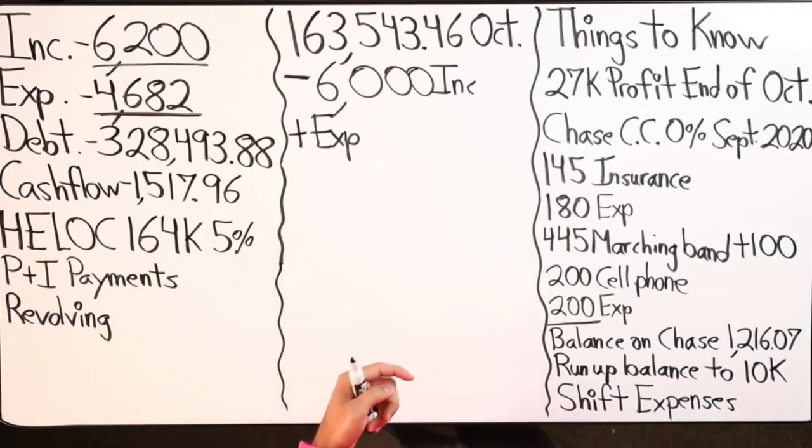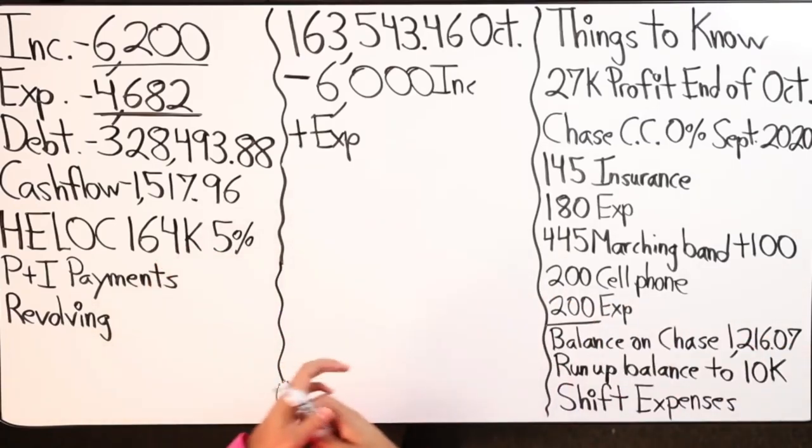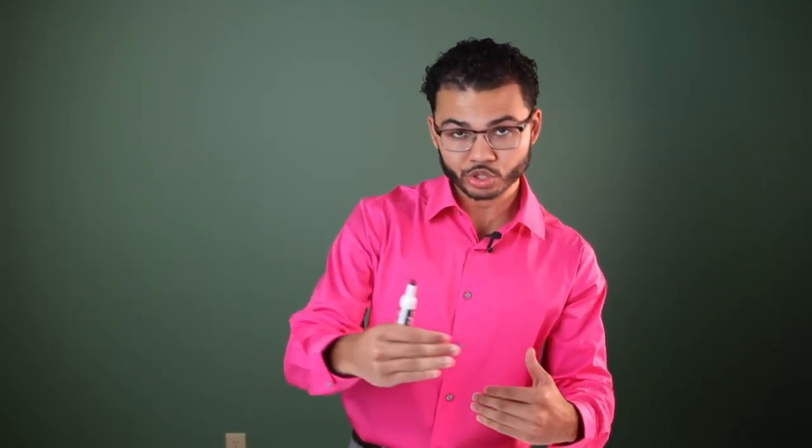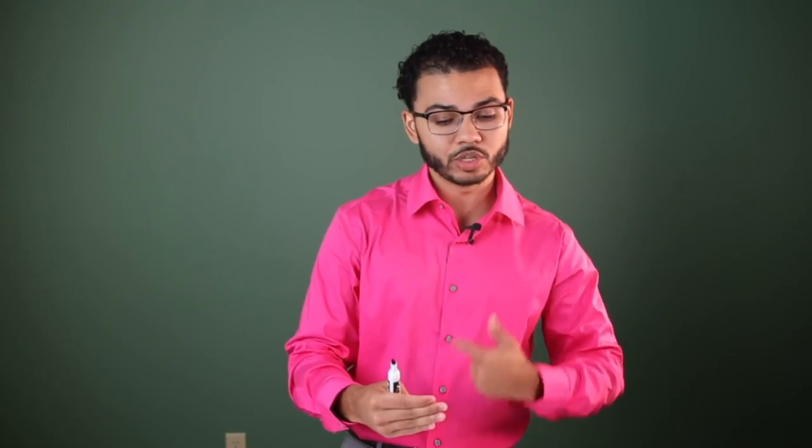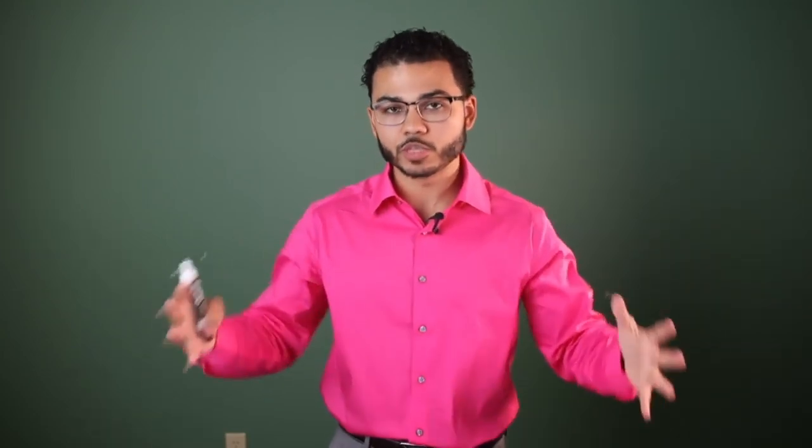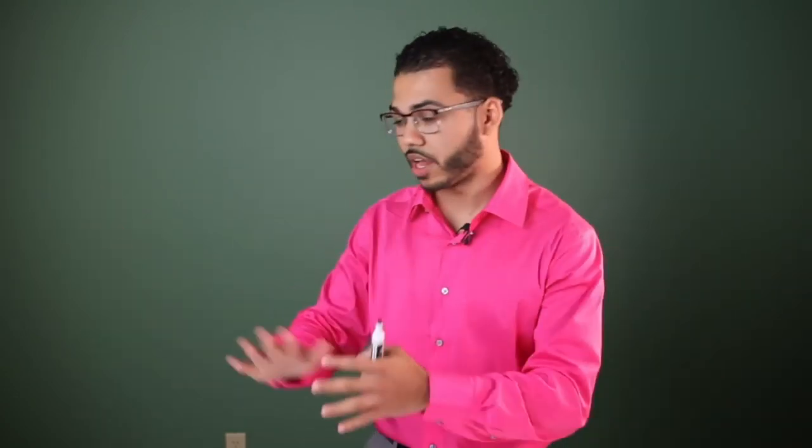At 5% interest, his current mortgage payment is around $1,400–$1,533 per month, with $600-plus going toward interest each month on the HELOC. To reduce that, we're doing velocity banking on the debt tool itself to create space so we can then chunk at his other debts.